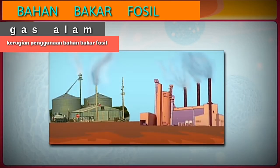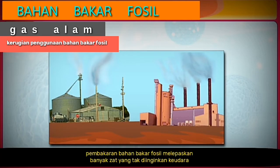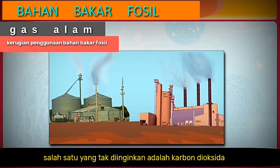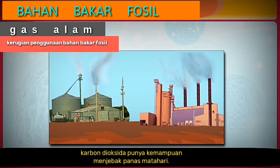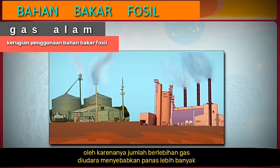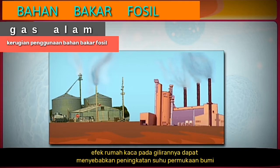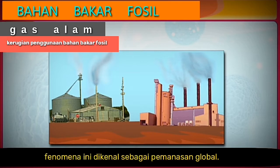Fossil fuels on burning release a lot of unwanted substances into the air, causing air pollution. One such unwanted gas released is carbon dioxide. Carbon dioxide has the ability to trap the heat of the sun. Hence, excessive quantities of this gas in the air cause trapping of more heat, resulting in the greenhouse effect. The greenhouse effect in turn can lead to an increase in the surface temperature of the earth, a phenomenon known as global warming.